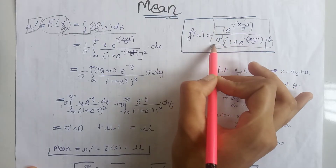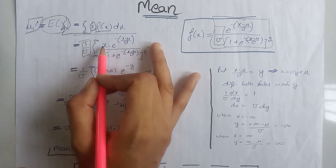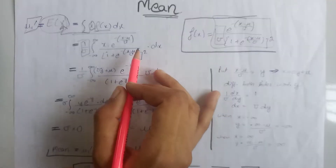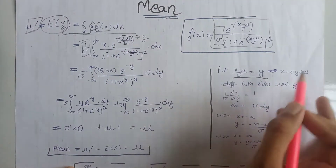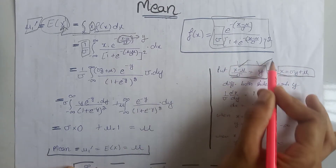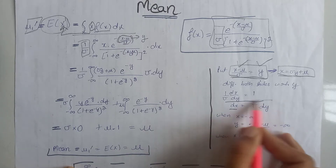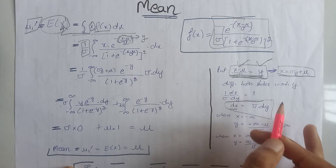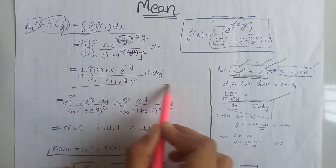We can see that 1 divided by sigma is a constant term, so we write that term outside the integration. We know that in the logistic distribution, values of x lie between minus infinity to infinity. Now we will use substitution: this term equals y. From here, we get the value of x. On differentiating both sides with respect to y, we get dx equals sigma multiplied by dy. Using these three equations, we get the substituted expression.